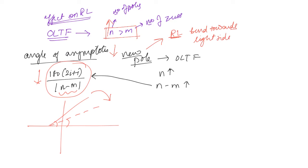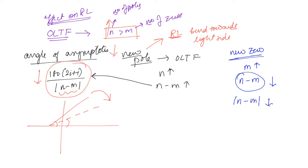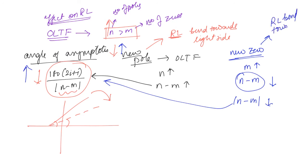Now let us say a new zero is added. When there is a new zero, m is increasing, so n minus m will reduce. Since n is already greater than m, the difference n minus m will also reduce. When the denominator is reducing, the angle will increase — so the angle of asymptote will increase. This is the opposite effect compared to adding a pole. Therefore, for a new zero added to the open loop transfer function, the root locus will bend towards the left. This is the effect of adding a new pole or zero to the open loop transfer function.